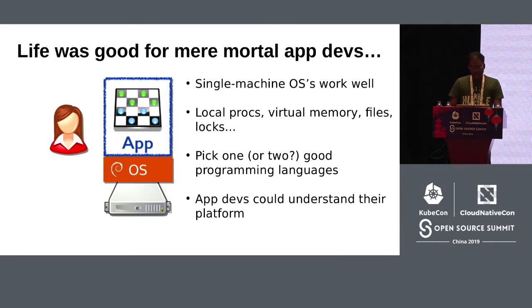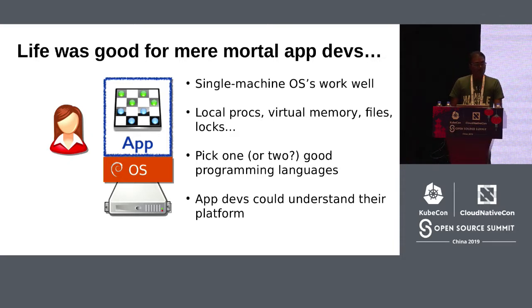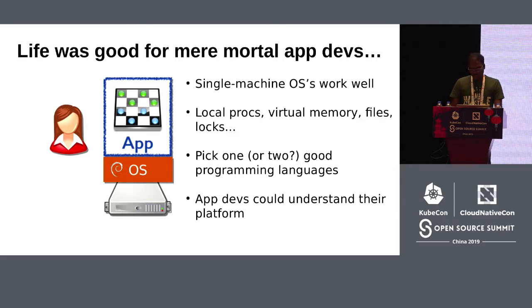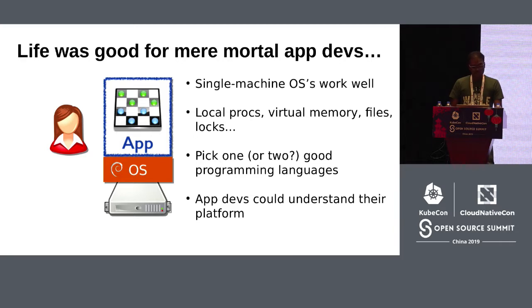Single-machine operating systems worked fairly well — Linux, Windows, Mac OS. All of them provide a great layer of abstraction for application programming with basic building blocks like local processes, virtual memory, file system, synchronization primitives, and locks. All of these are indispensable when writing an application for a single machine. Mostly one or two programming languages are required, and application programmers understand their platform pretty well.